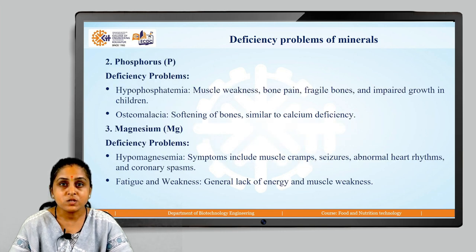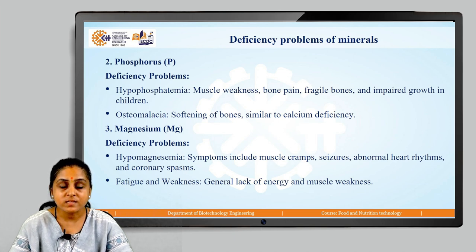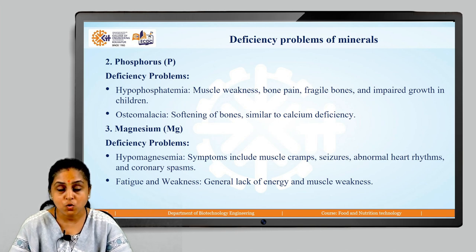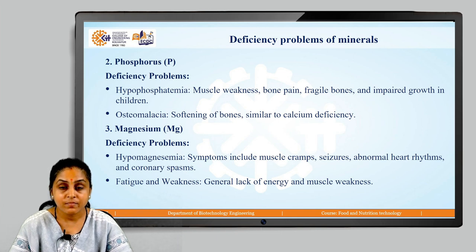Due to deficiency of phosphorus in our body, the first problem is hypophosphatemia, which leads to muscle weakness, bone pain, fragile bones and impaired growth in children. Osteomalacia is another problem, whose symptoms involve softening of bones, similar to calcium deficiency.